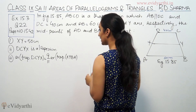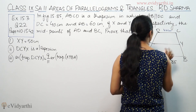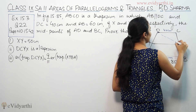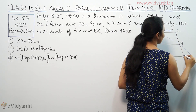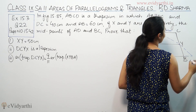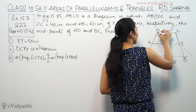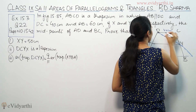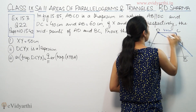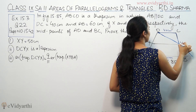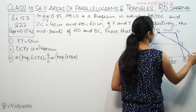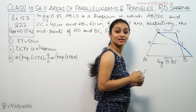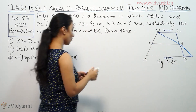We have to prove that XY equals 50. To do this, we will extend a line a little bit and join it, giving us two triangles to work with.